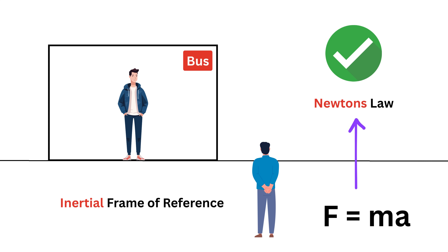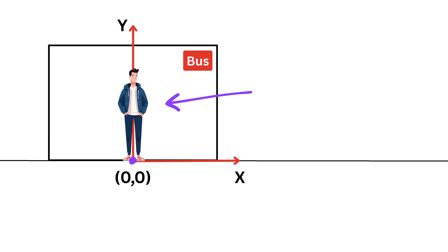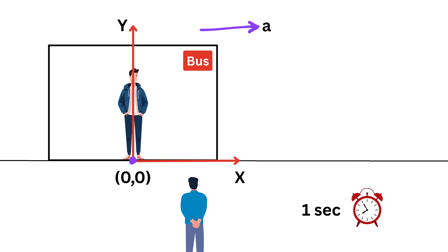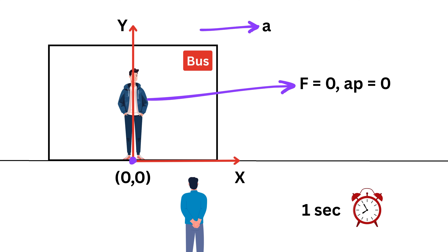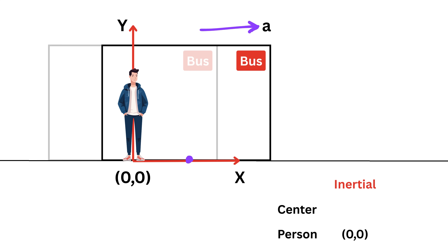Let us set up a coordinate system. We fix an x and y axis on the ground with the center of the bus at the origin — x = 0 and y = 0. The person is also standing exactly at the center of the bus. Now suppose the bus suddenly accelerates to the right with acceleration a, and there is no friction between the person and the bus floor. After one second, from my point of view as an observer on the ground, the person did not experience any force. So force is zero, and by Newton's law, acceleration is zero — the person stays at x = 0.